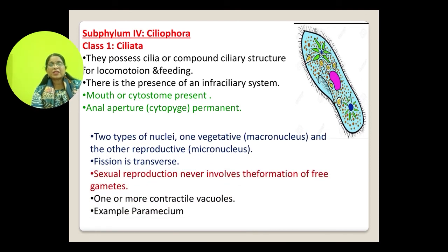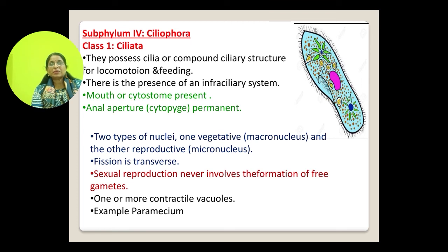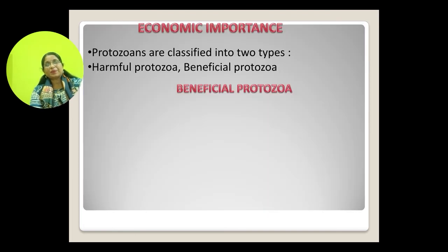In Ciliata, two types of nuclei are present: a vegetative macronucleus and a reproductive micronucleus. Fission is transverse, sexual reproduction also takes place, and one or more contractile vacuoles may be present. The classic example is Paramecium.